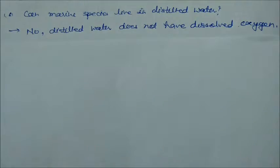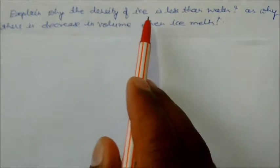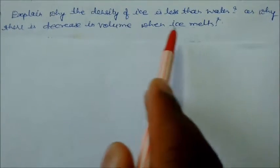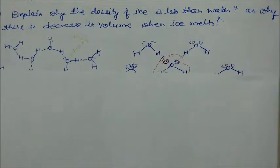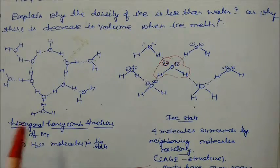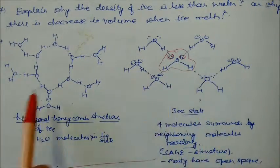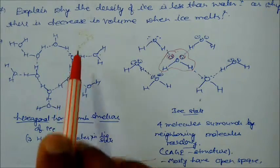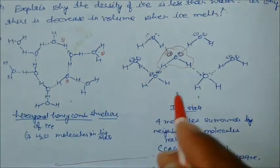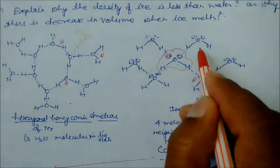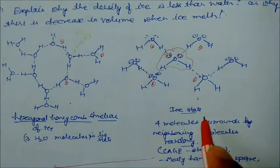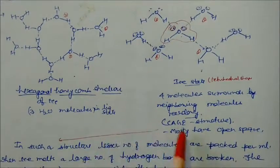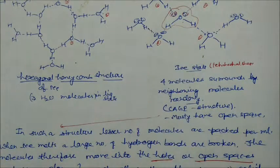Explain why the density of ice is less than water, or why there is a decrease in volume when ice melts. If you see the structure of ice and water in free states, in water each molecule is surrounded by three water molecules in hexagonal arrangement, but in ice state each water molecule is surrounded by four molecules in tetrahedral shape. This creates more volume and open spaces. In this structure, lesser number of molecules are packed per ml.